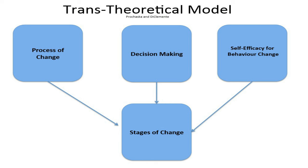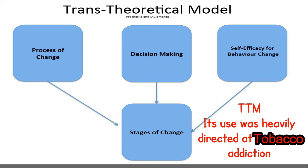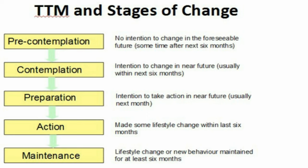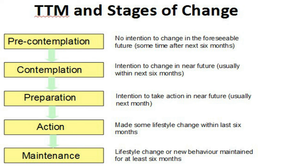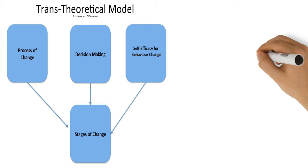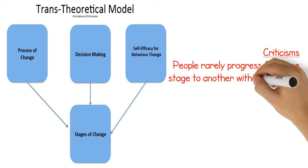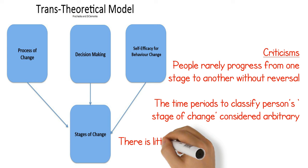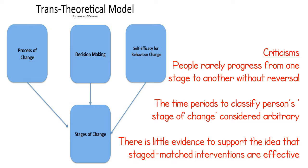The trans-theoretical model stages of change was created following research into smoking cessation, and when adopting healthy behaviours such as regular physical activity or eliminating unhealthy ones such as watching too much television, this model states that people progress through five levels of change depending on their readiness. The five stages are pre-contemplation, contemplation, preparation, action and maintenance. Each stage has different intervention strategies that will help people progress to the next stage, although this model also considers that people can enter, exit and relapse at any stage. Criticisms of this model are that people rarely progress from one stage to another without reversal, the time periods used to classify a person's stage of change are considered arbitrary, and there is little evidence to support the idea that stage-matched interventions are effective.